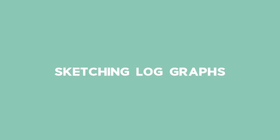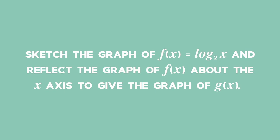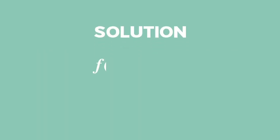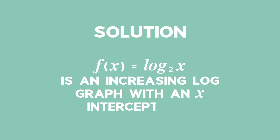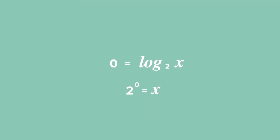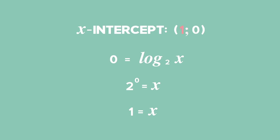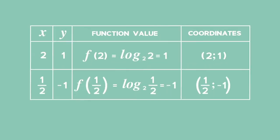Example 3: Sketching log graphs. Sketch the graph of f of x equals log x base 2 and reflect the graph f of x about the x-axis to give the graph of g of x. f of x equals log x base 2 is an increasing log graph with an x-intercept of 1. To find the x-intercept, we substitute y with 0 and, changing from log to exponential form, we get x equals 1. This gives the coordinates of the x-intercept as (1, 0). You can use a table or a calculator to work out two or more points that lie on the graph.